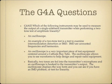Which of the following instruments may be used to measure the output of a single sideband transmitter when performing a two-tone test of amplitude linearity? The answer is an oscilloscope. This question is about amplitude linearity, but another two-tone test checks for intermodulation distortion — IMDs are unwanted frequencies and harmonics. An oscilloscope is essentially a screen where you can see waveforms on an X and Y axis. The two tones are fed into the transmitter's microphone, and the oscilloscope is hooked up to the transmitter's output to display the waveform and check for linearity or intermodulation problems.